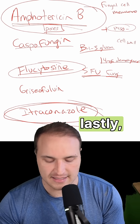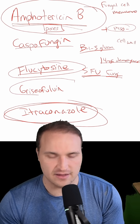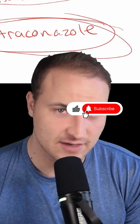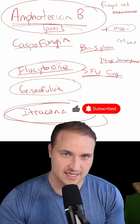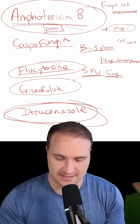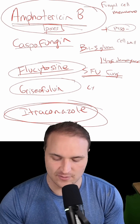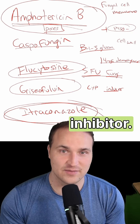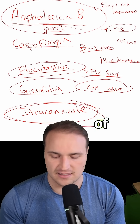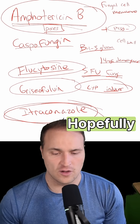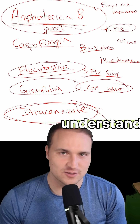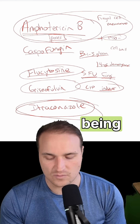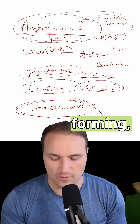Lastly, griseofulvin disrupts microtubules and mitosis, and importantly this is a CYP inducer, not inhibitor — it's the opposite of what we're looking for. Hopefully that helped you understand the differences: amphotericin B being pore-forming and causing membrane leakage, not CYP450.